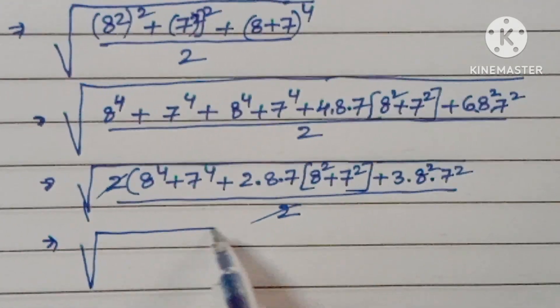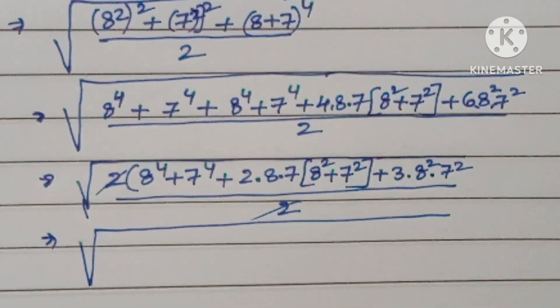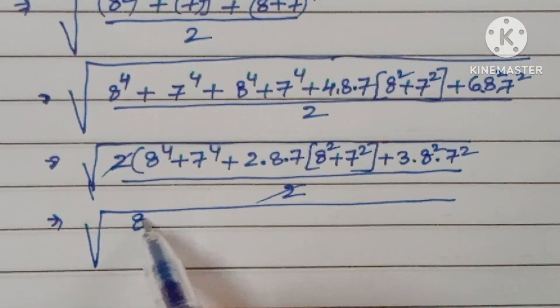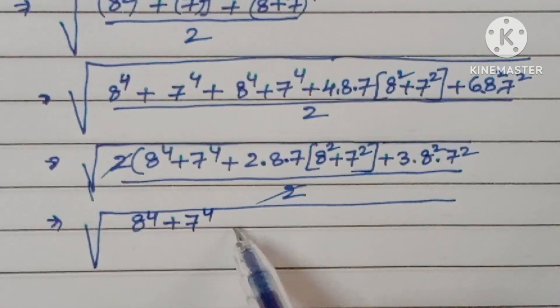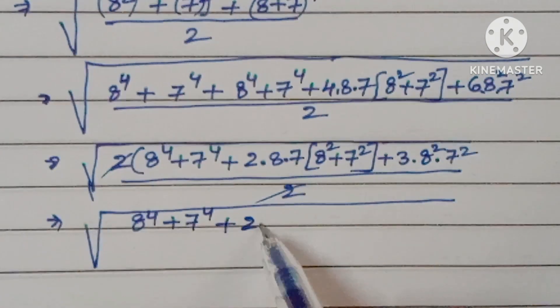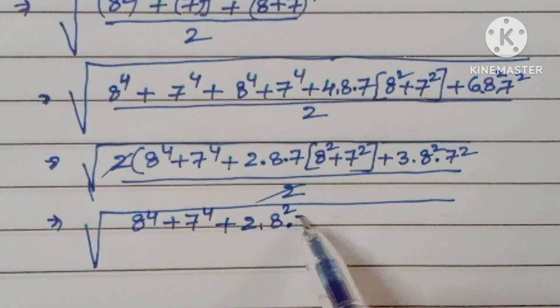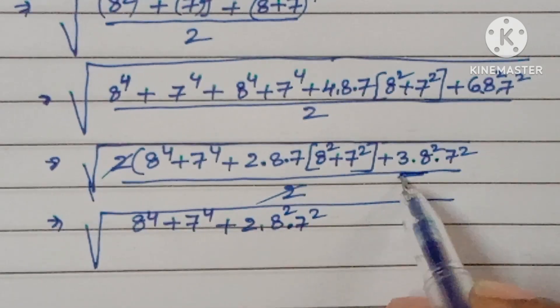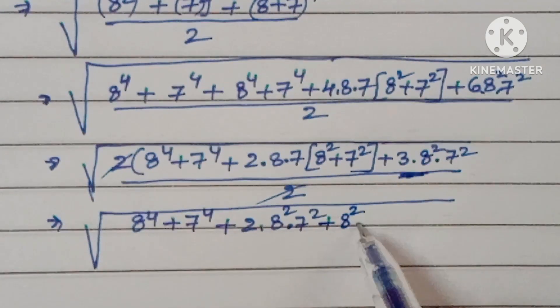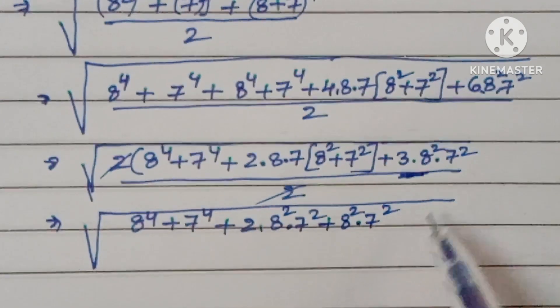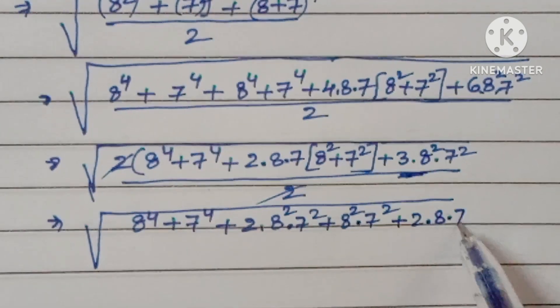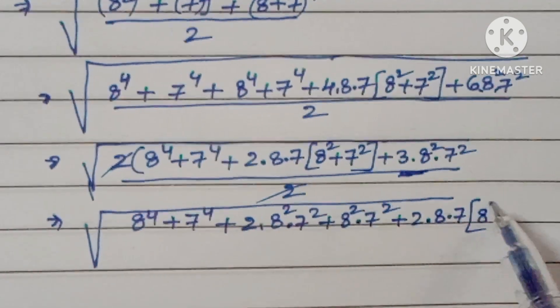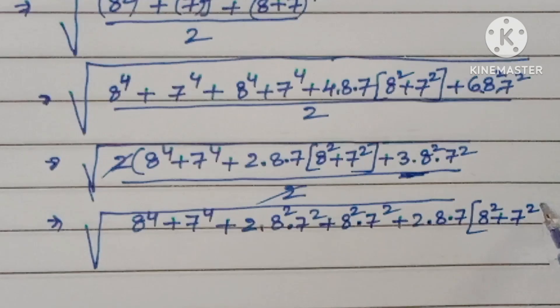Now square root of, doing some adjustment here: 8⁴ plus 7⁴ plus 2 times 8² times 7², plus 8² times 7² plus 2 times 8 times 7 times (8² plus 7²).